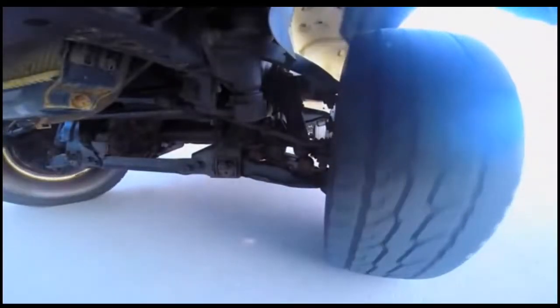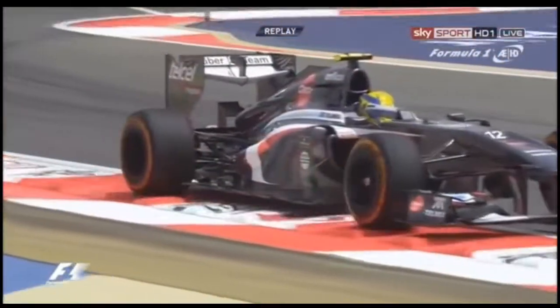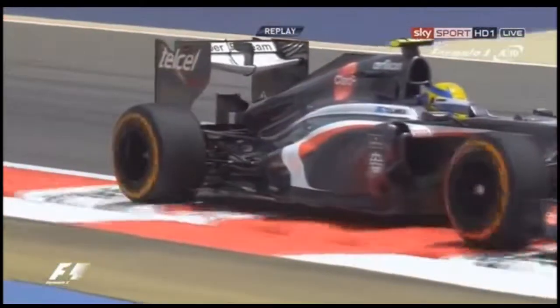Here we have independent suspension in a real car. The wheel closest to camera can move up and down without being affected by the other wheel. Formula One cars also have independent suspension, although they are very stiff and it is hard to see them move.